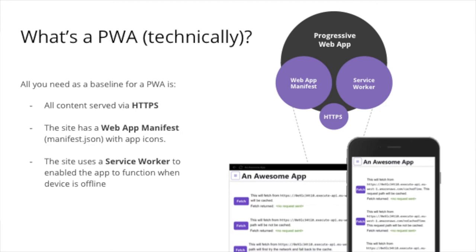The next requirement is what's known as a web app manifest — a simple file that informs the browser it's dealing with a progressive web application, what its name is, and other bits like icons. The third part, which is the most complex and biggest part, is that the site needs to use a service worker — something running separately to your main web application that provides offline support and background functionalities bringing a more app-like capability to your web app.